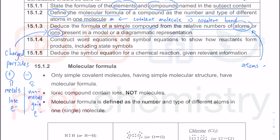Atoms are uncharged — they have no charge — which means the number of protons equals the number of electrons. This links very well to your atomic structure topic where we counted the number of protons, electrons, and neutrons when filling in those boxes — a very popular exam question we have seen in the last topical test and your mid-year assessment. I'll leave 15.1.4 and 15.1.5 for the next lesson.